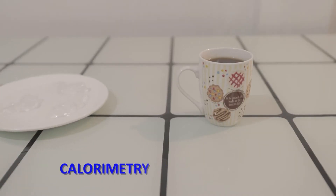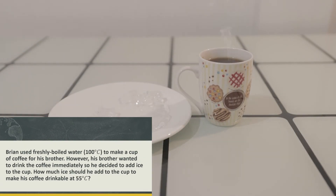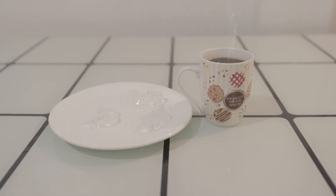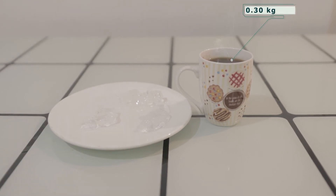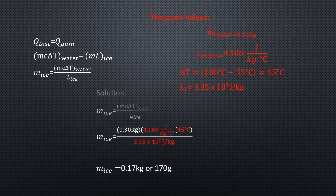We use calorimetry to measure the heat gains and losses in objects of differing temperature and heat capacities. Assume that the coffee has the same heat capacity as water, which is 4,186 joules per kilogram per degree Celsius, and there is 0.30 kilogram of coffee or water in a cup. We begin by assuming that the heat lost by the cup of coffee or water is equal to the heat needed to melt the ice. Deriving this equation, we obtain mass of ice is equal to M C delta T of water divided by the latent heat of fusion of ice. By inputting these values into the equation derived above, we obtain the mass of ice which is 0.17 kilograms or 170 grams to cool the water or coffee.